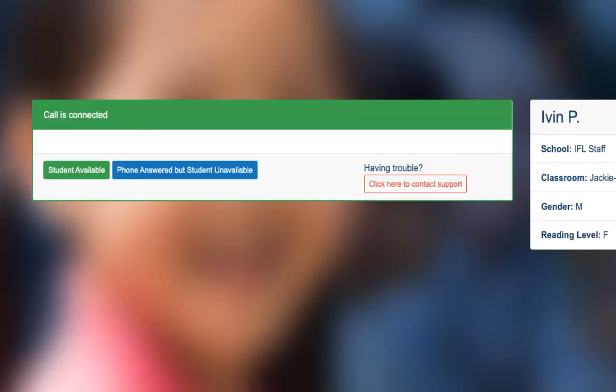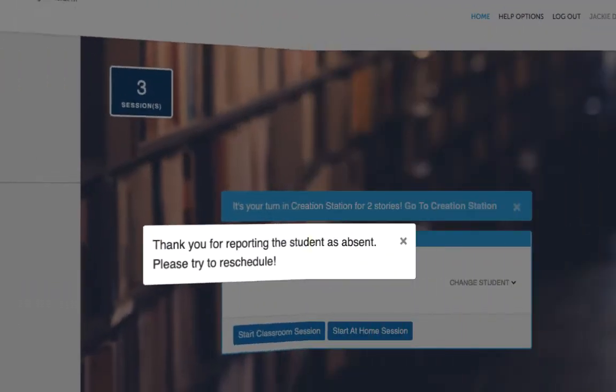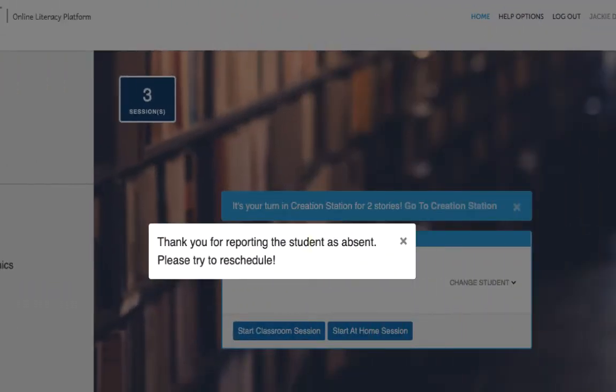If your pupil is not available, click Phone Answered but Student Unavailable. This will automatically generate a report to let us know your student was not present for the session. You will also get a prompt to reschedule your session.